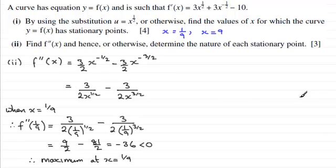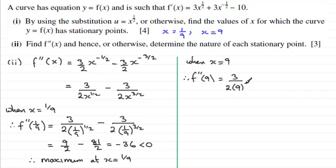Next we need to look at what happens when x = 9. So when x = 9, we just need to work out f''(9). And similarly, it's going to be 3/(2×9^(1/2)), the square root of 9, minus 3/(2×9^(3/2)).